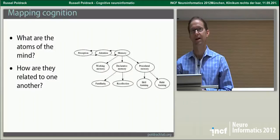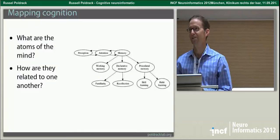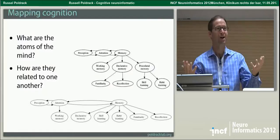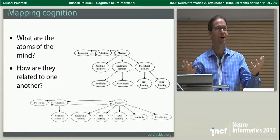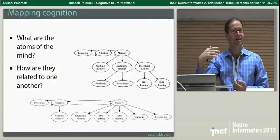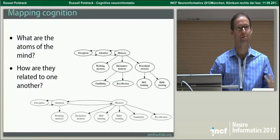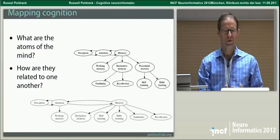A thought experiment I like to suggest: what would have happened if the phrenologist had had functional MRI? It's doubtful they would have decided that phylo-progenitiveness and their other faculties weren't real — they would have found blobs that map onto those things, because presumably all those faculties are correlated with real psychological functions. Something would have lit up and they would have taken that as evidence for the reality of those things, which is clearly not an appropriate strategy.